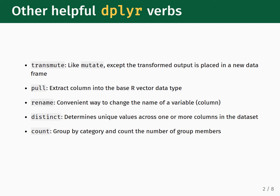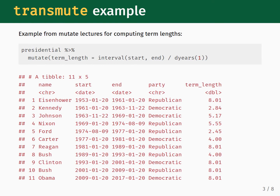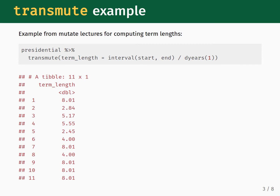Let's now look at some examples of how each of these functions works on the presidential dataset. First, let's see what transmute does. Recall in the mutate lecture that we ran this command to compute the term length for each of the presidents. The output shows the original presidential dataset with a new column named term_length appended to the end of the dataset. Now, let's see what happens when we replace the word mutate with transmute. We see that the rest of the dataset disappears except for the term_length column. So we would only want to use this if we did not care about preserving the rest of the data in the dataset after we perform our calculation.